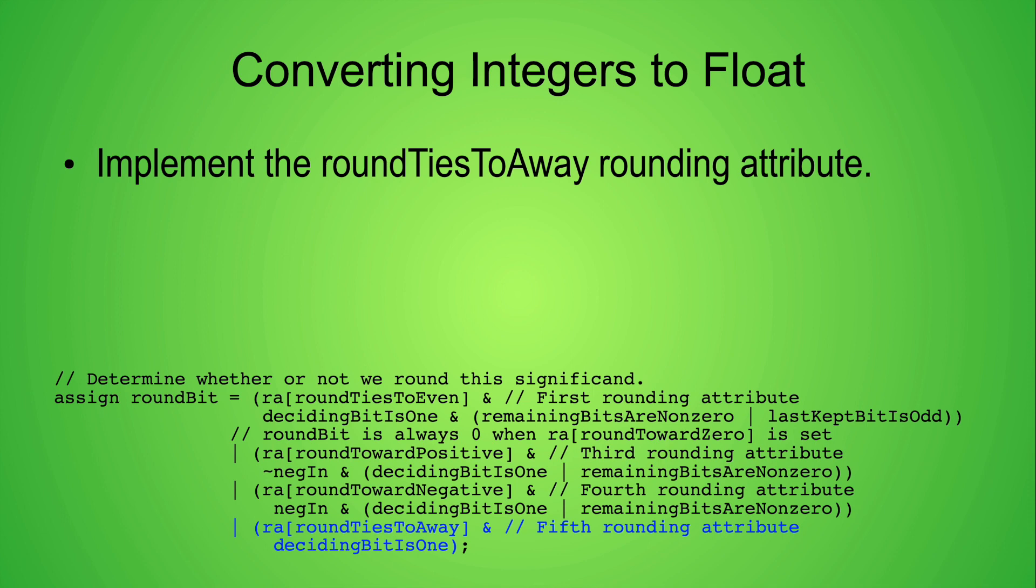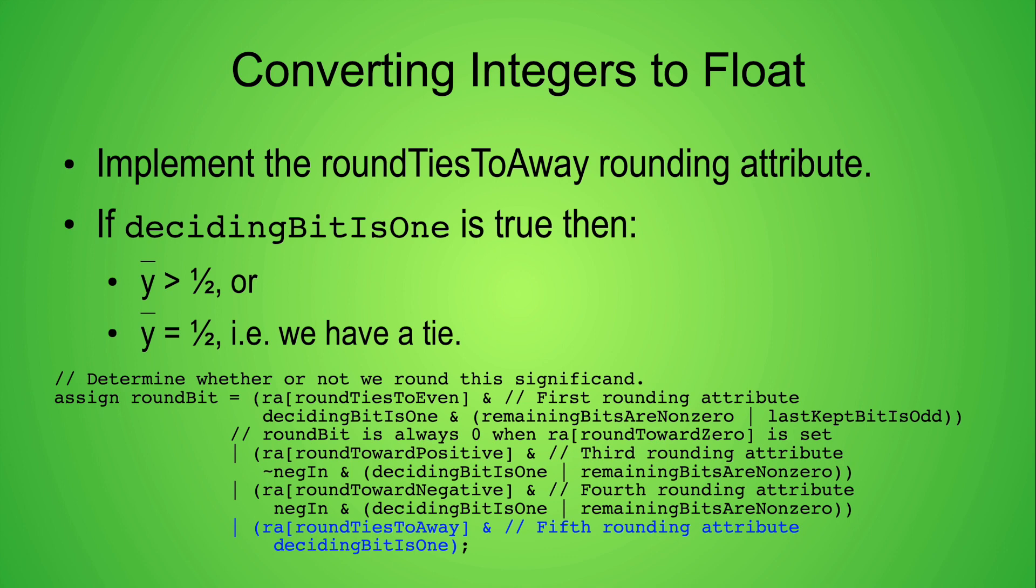To implement the round ties to away rounding attribute we can add the text in blue below. Remember that decidingBit is 1 is an alias for the most significant bit of yBar as defined in the previous video. If decidingBit is 1 is true then either yBar is greater than one half or we have a tie. In either case we need to round the significand up to f plus 1.